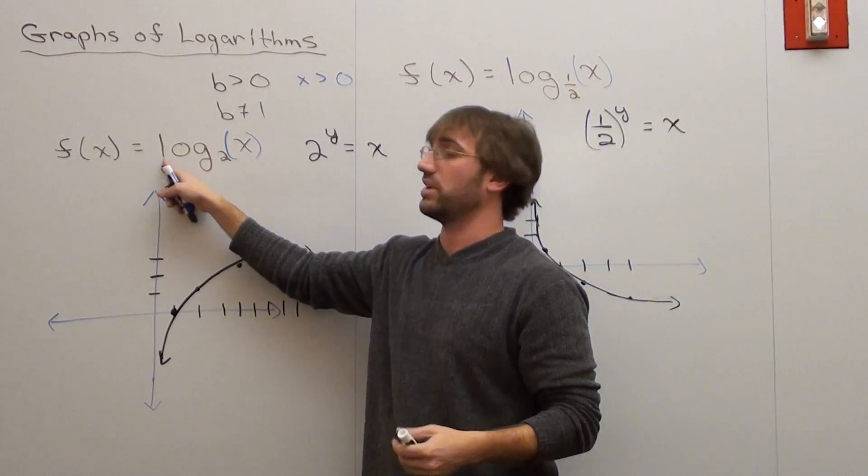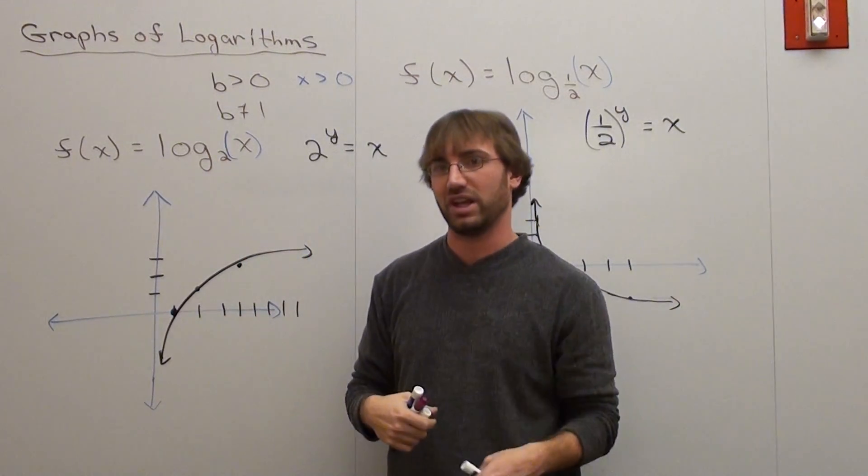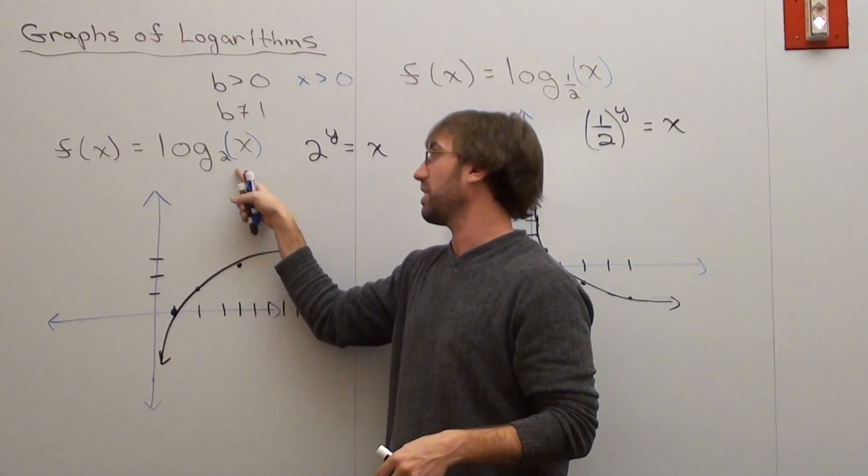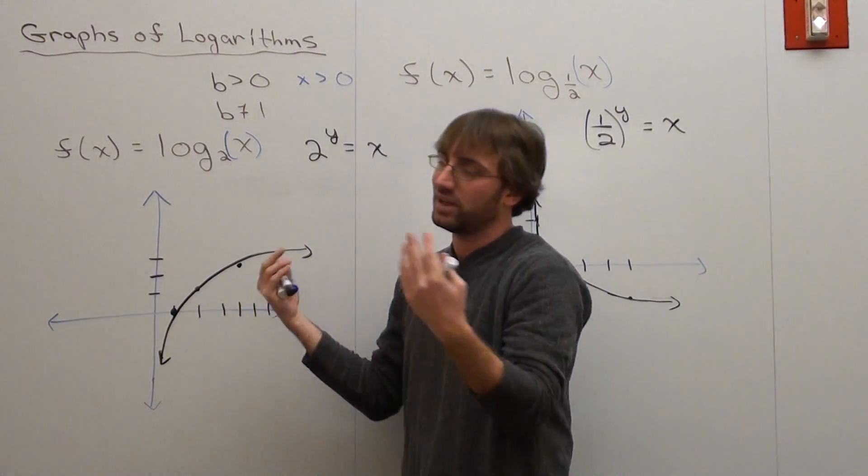If I put a coefficient, or I suppose a multiplier in front of my logarithmic function, then it increases the values by whatever that is. So if it's 2 times log base 2 of x, I first do this, and then I multiply those values by 2. It's pretty cool.